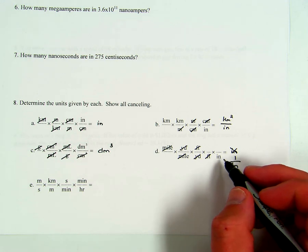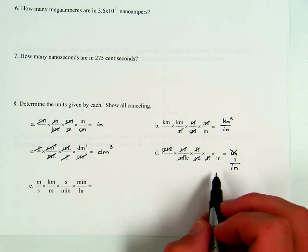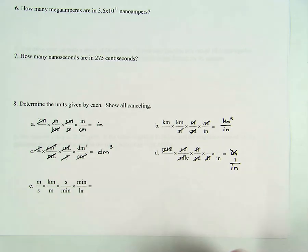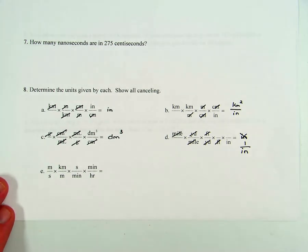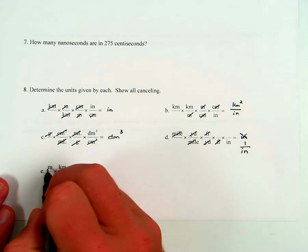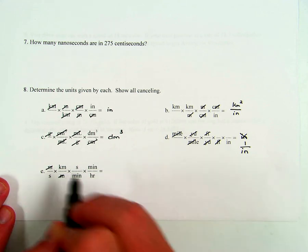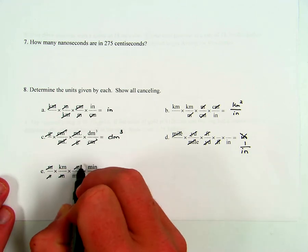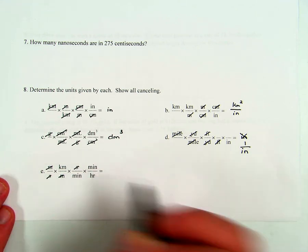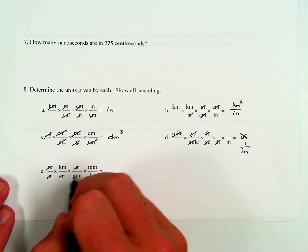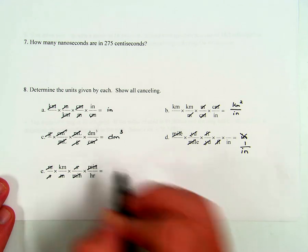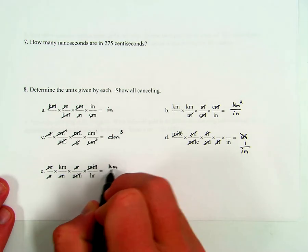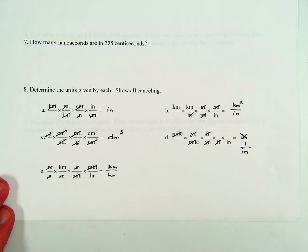In the last one: meters cancel, seconds cancel — remember they don't have to be right next to each other, one just needs to be in the numerator and one in the denominator — minutes also cancel, leaving kilometers per hour. The rest of these examples I'm going to do in the second video, which you'll watch at a later date.